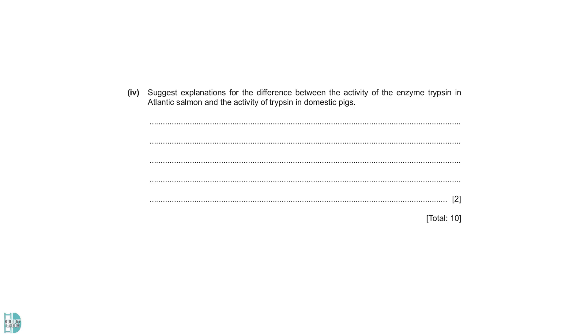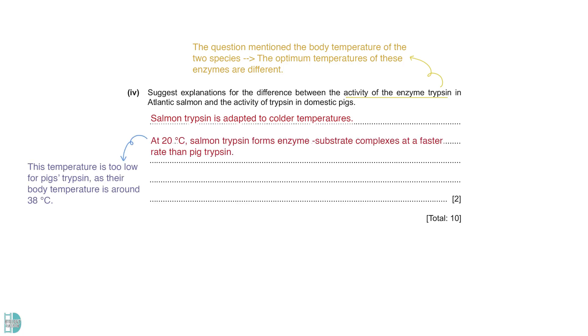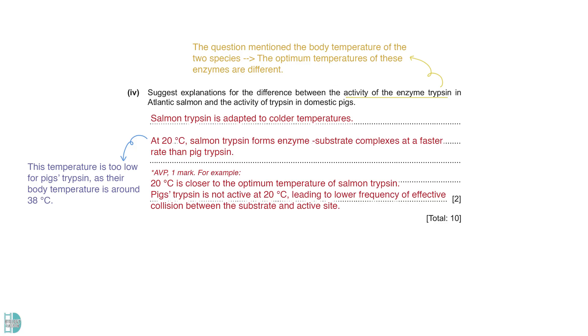Part 4. Suggest explanations for the difference between the activity of the enzyme trypsin in Atlantic salmon and the activity of trypsin in domestic pigs. At the beginning of the question, we have some information about the body temperature of the two species. So, it is safe to say that the optimum temperatures of these enzymes are very different. Salmon trypsin is adapted to colder temperatures. In other words, it has a lower optimum temperature than pig trypsin. The experiment was carried out at 20 degrees Celsius. This temperature is too low for pig trypsin, as their body temperature is around 38 degrees Celsius. So, salmon trypsin forms enzyme substrate complexes at a faster rate than pig trypsin. There is a mark for AVP. For example, you can state that 20 degrees Celsius is closer to the optimum temperature of salmon trypsin. You can also explain why pig trypsin has low activity.